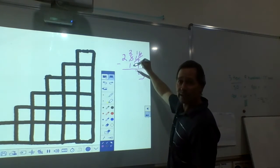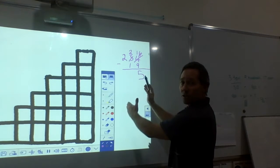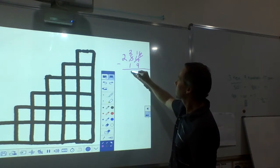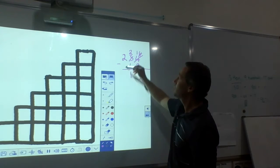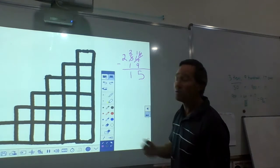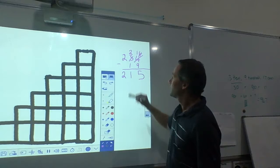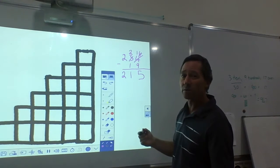2 tens minus 1 ten leaves 10, but it's in place value and it's in the column. 2 take away 1, 1. And 2, there's nothing to take away from 2, so it stays the same. 250, which I know you would have got because you're awesome.